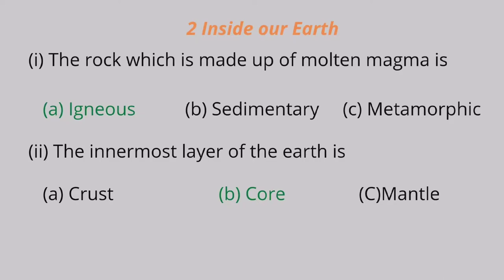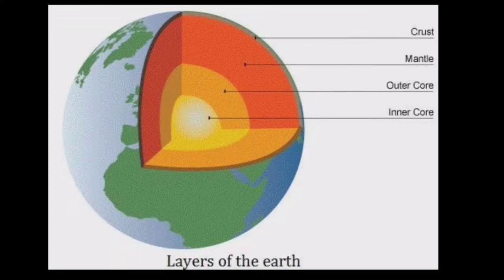Question 2: The innermost layer of the earth is A. Crust, B. Core, C. Mantle. Core is the correct answer. Look at the diagram — crust is the uppermost layer, mantle is the middle layer, and core is the innermost layer.